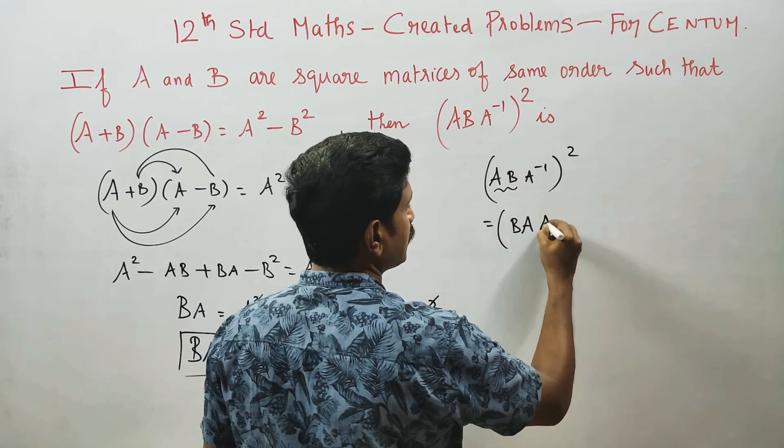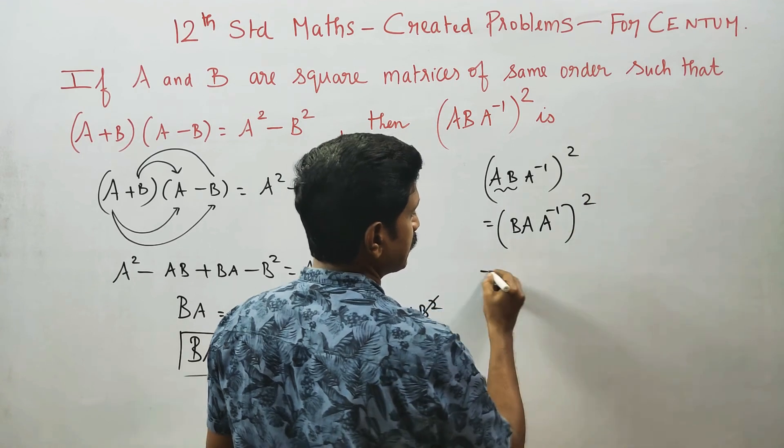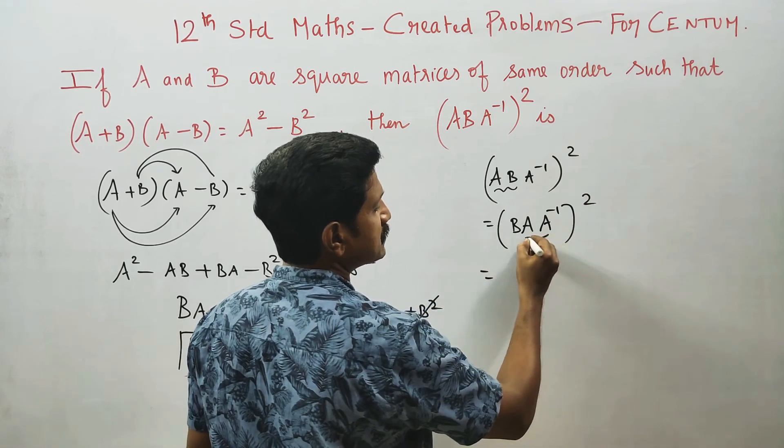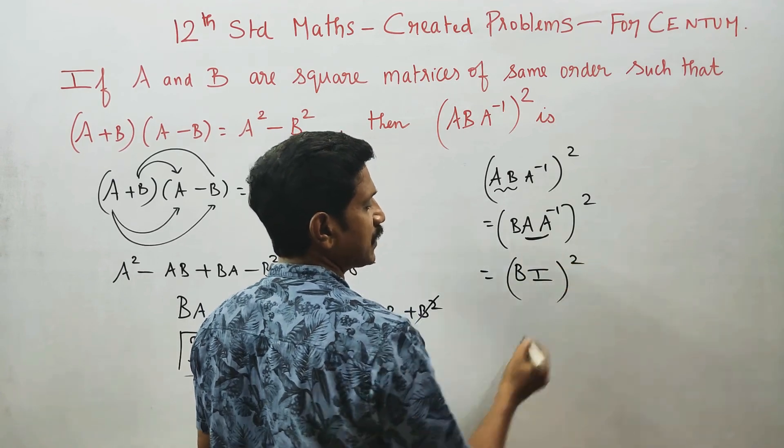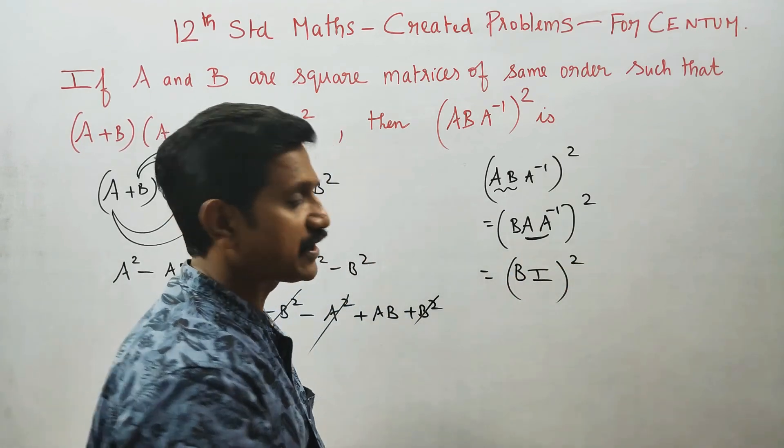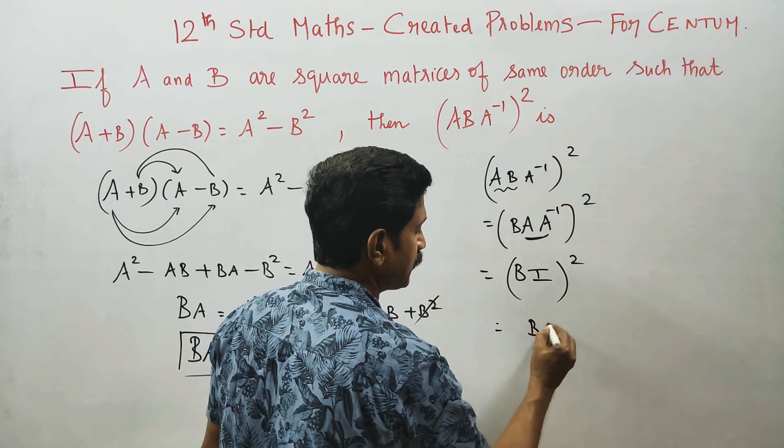The class says A B A transpose square. You should know that B A A transpose square is like half square. One unit matrix is B and B is B. Then B is B2.